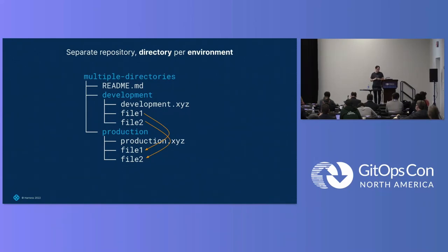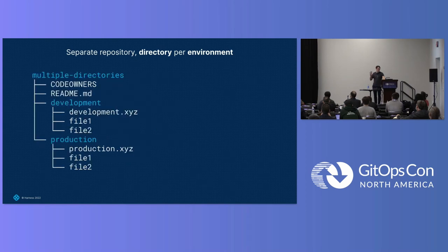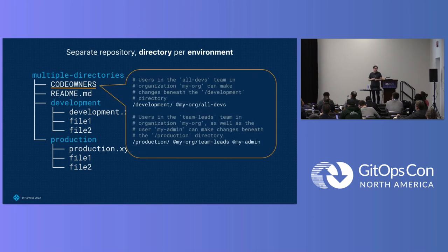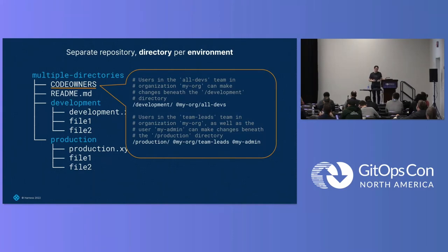Something worth mentioning if you're concerned about security with this kind of workflow — multiple developers being able to change development and production — is a feature in GitHub called Code Owners. It's apparently been there for years, but I just found out about it last month. With this you can define rules saying these people or these teams need to approve changes to these files or directories before they can be merged. That's worth looking into from a security standpoint.